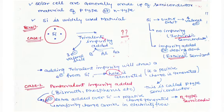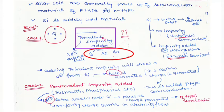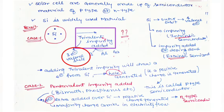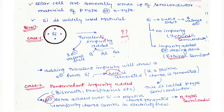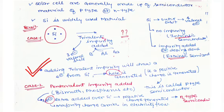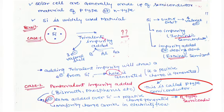When we talk about impurity, there are two types: trivalent or pentavalent. Trivalent impurities include boron, aluminium, and gallium — they have three electrons. Silicon has four electrons in its outermost orbit. When trivalent impurity is added, one electron from silicon is withdrawn, a positive charge is generated on silicon, and the resulting semiconductor material is called P-type semiconductor.